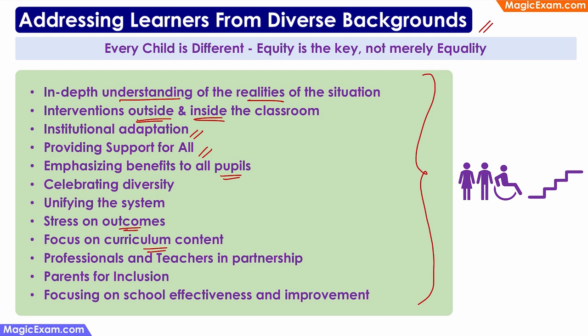You should not just look at the process but also at the results. The curriculum should be suitable for inclusive education. Professionals, teachers, and parents should also be included in this effort, and inclusive education should be implemented at a school level — not just in the classroom. School effectiveness and improvement is also necessary. These are all very generic points about how to address learners from diverse backgrounds.